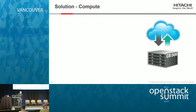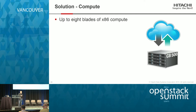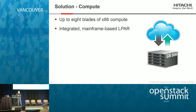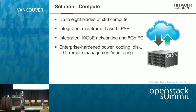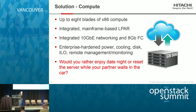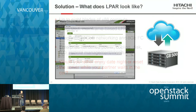How did Hitachi bring that to bear with our partners? From a compute standpoint, we have our CB500 chassis with up to eight blades of x86 compute. It has integrated mainframe-based LPAR. Hitachi used to make mainframe servers — we took our mainframe LPAR team and migrated them onto x86, pulling all that technology with it. This is a significant differentiator for our compute. It also has integrated 10 gigabit networking and fiber channel, enterprise-hardened power, cooling, disk, integrated lights-out, and all the typical enterprise features. LPAR is an extremely capable system of dividing compute blades into multiple hard-provisioned compute resources — you can select virtual CPUs or cores, shared or dedicated memory, shared memory pools, virtual NICs, and virtual fiber channel adapters.